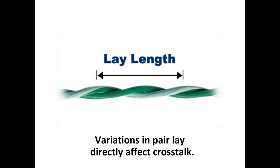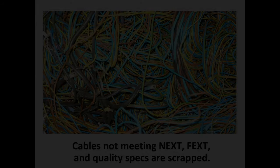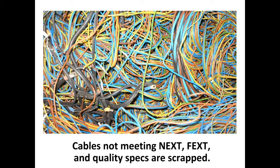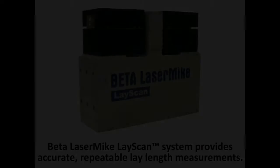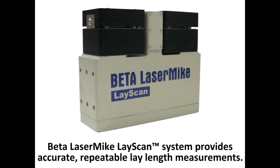Factors such as the pair lay length and the variations of the lay in twisted pair category cables — such as CAT-5E, CAT-6, CAT-6A, and CAT-7A products — directly affect crosstalk performance. Cables that do not meet the far and near end crosstalk and product quality specifications wind up being scrapped, significantly costing manufacturers in rework, materials, and overall productivity losses.